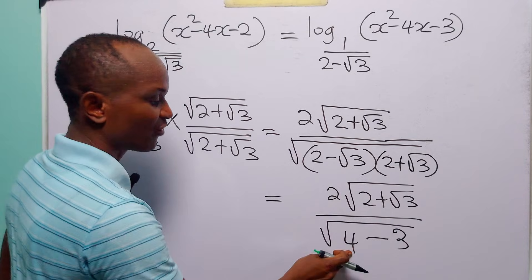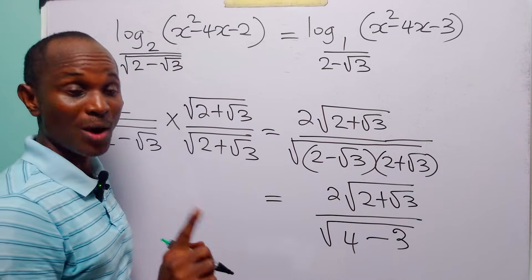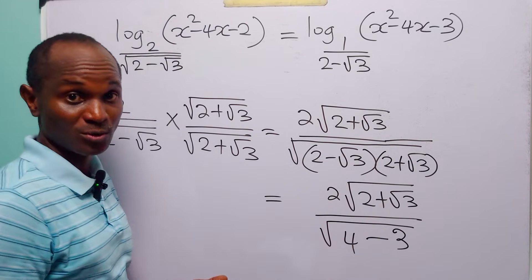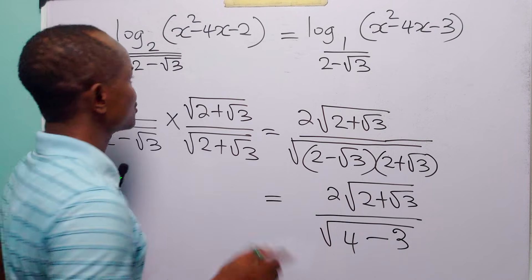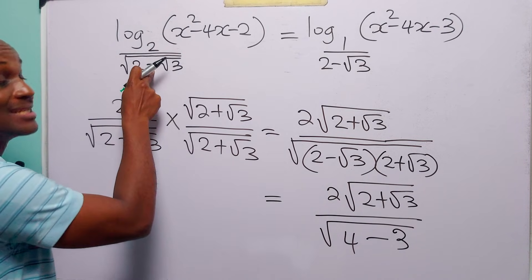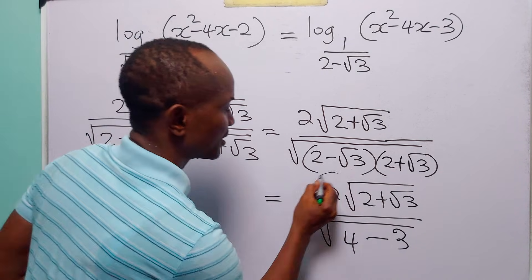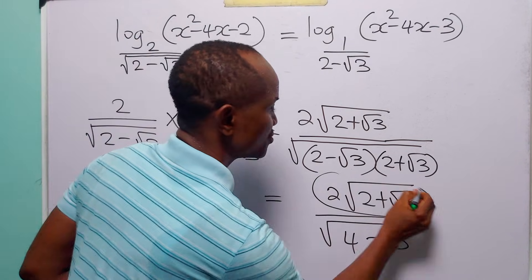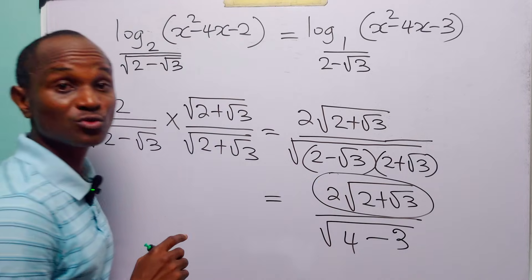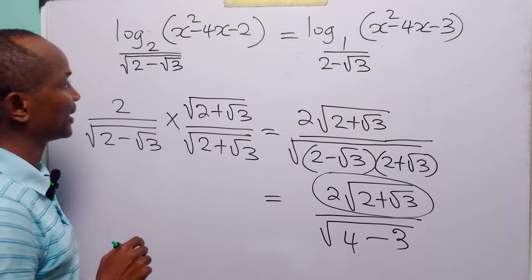Of course 4 minus 3 is equal to 1, and the square root of 1 is equal to 1. So we can now simplify this and replace it with 2 times the square root of 2 plus root 3.